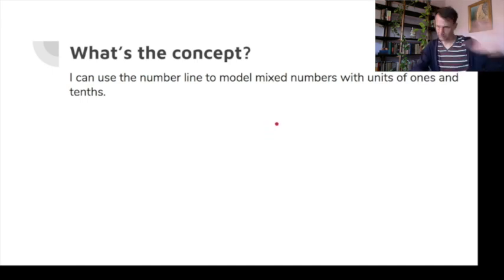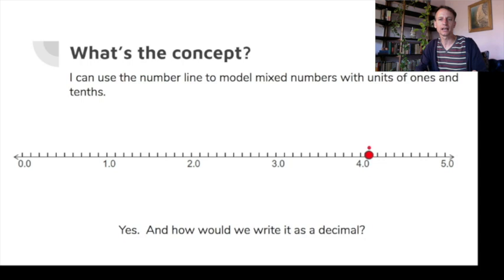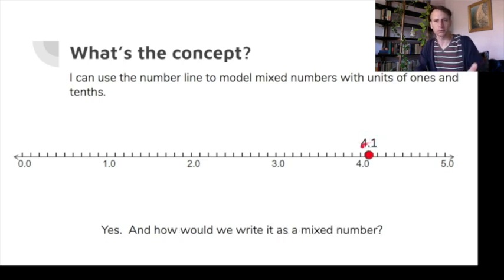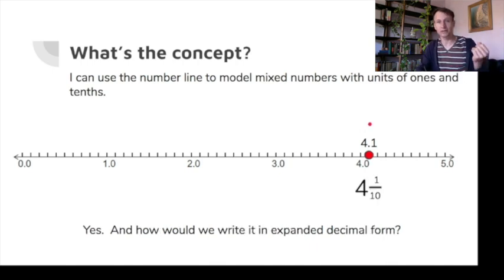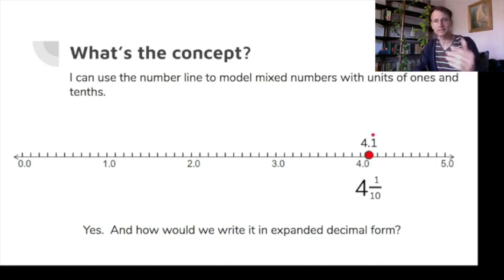Now mixed numbers on the number line — ones and tenths. Where is four and one-tenth? Count: one, two, three, four, then one more small mark — four and one-tenth. As a decimal: 4.1. As a mixed number fraction: four and one-tenth. In decimal expanded form: four times one plus one times one-tenth. The four is in the ones place, the one is in the tenths place.